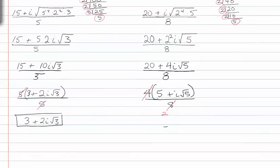I can now rewrite my final simplification as five plus i root five over two.